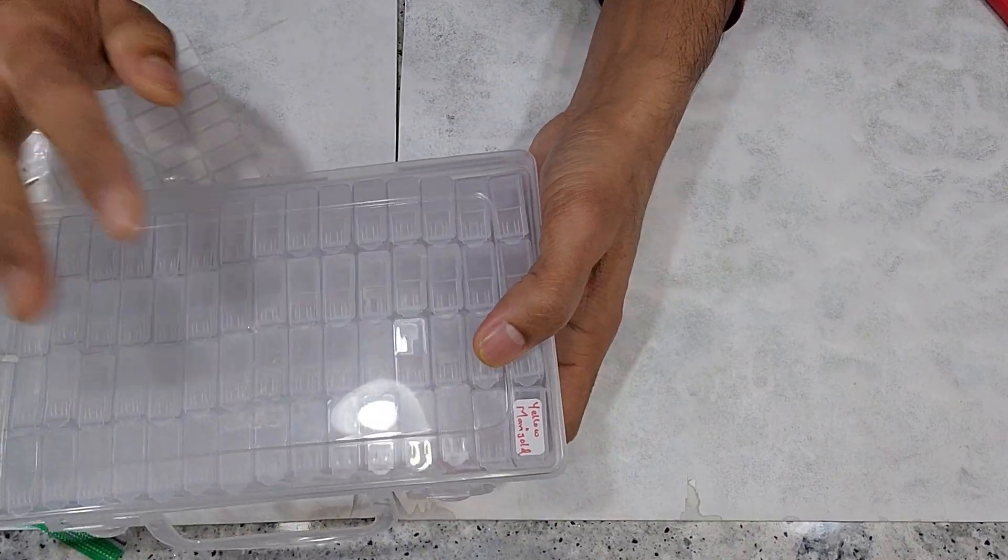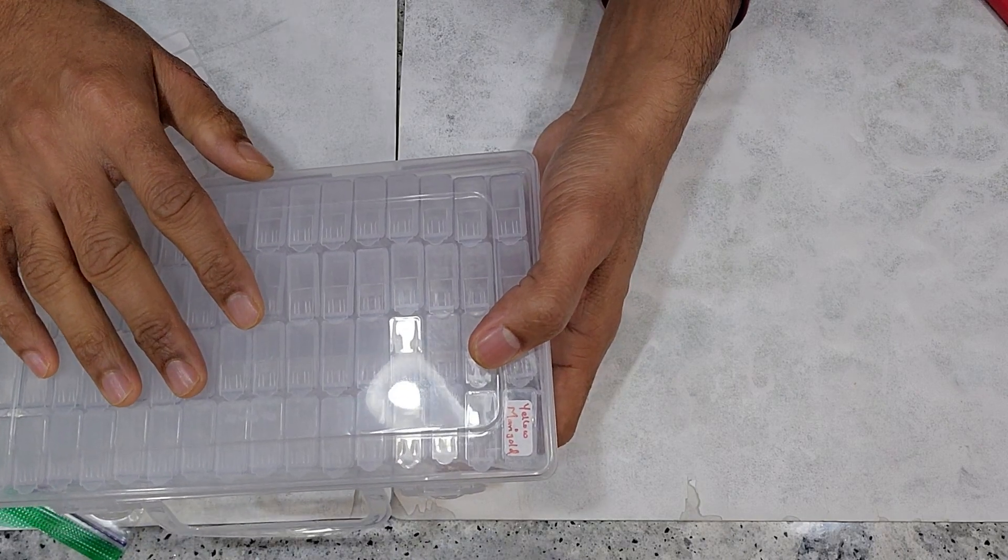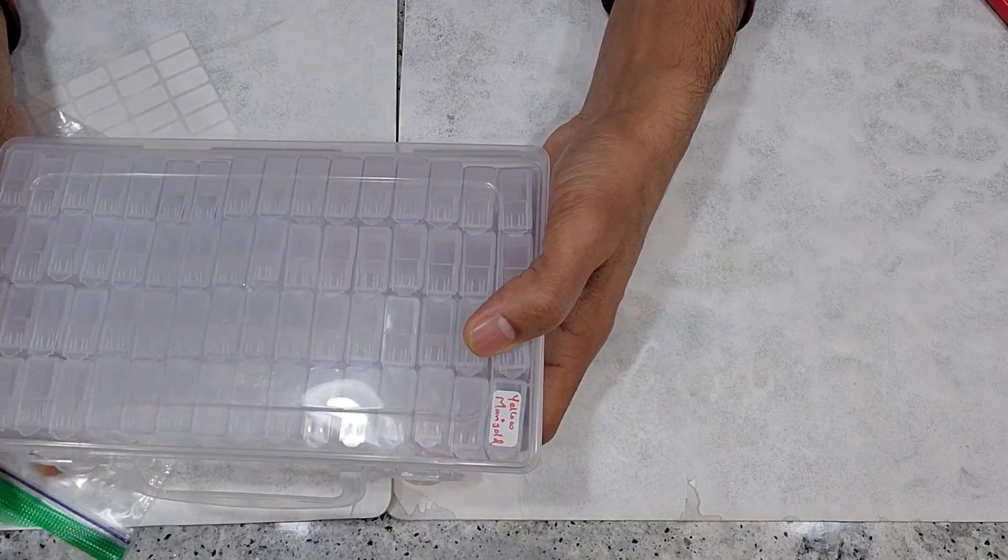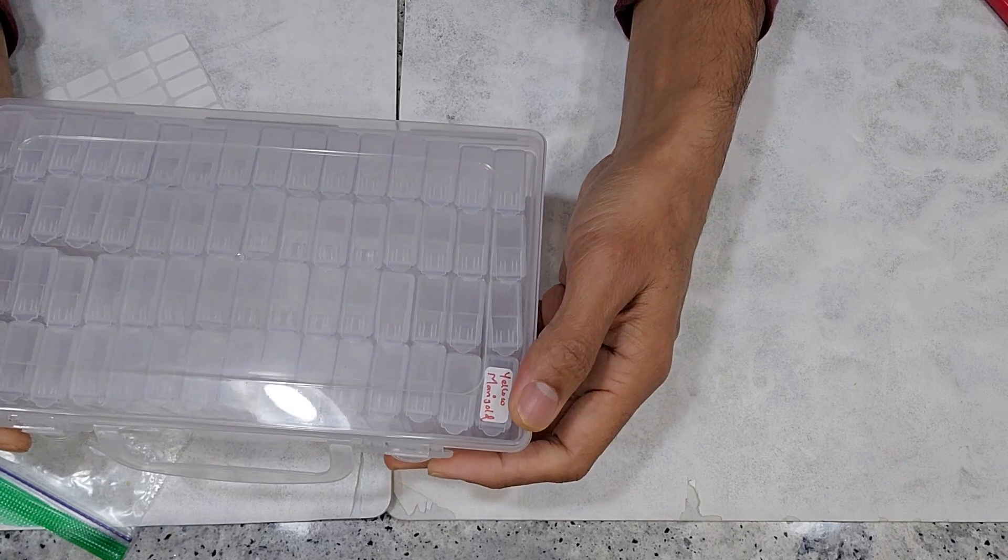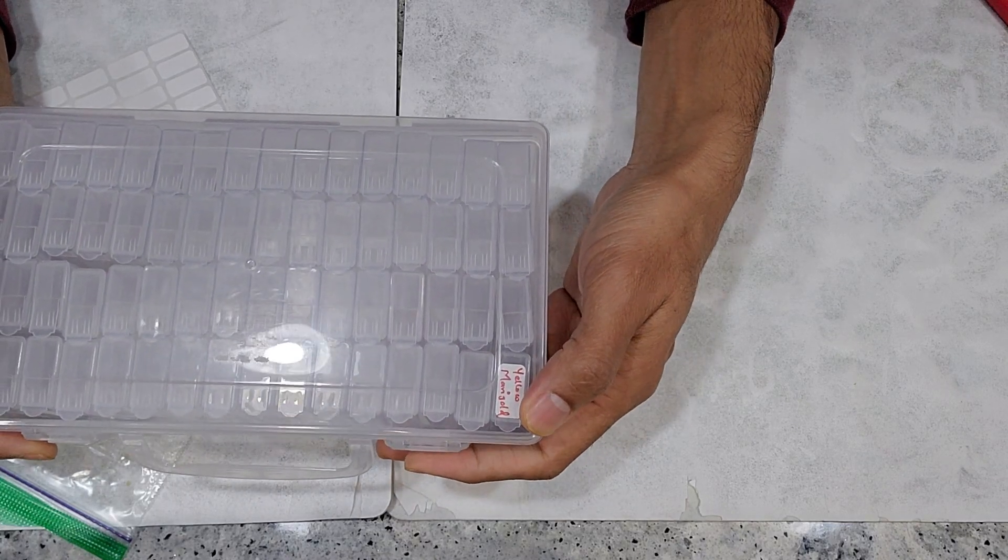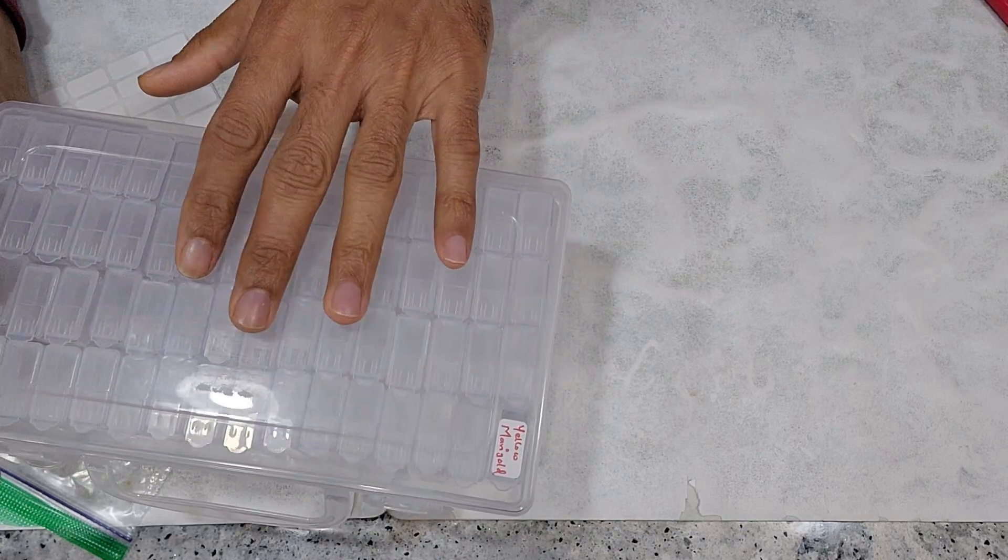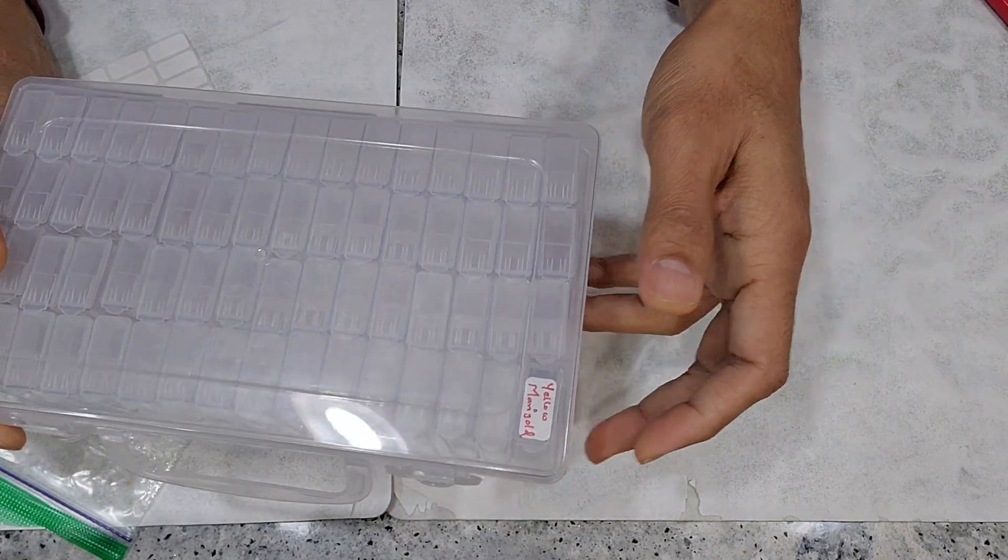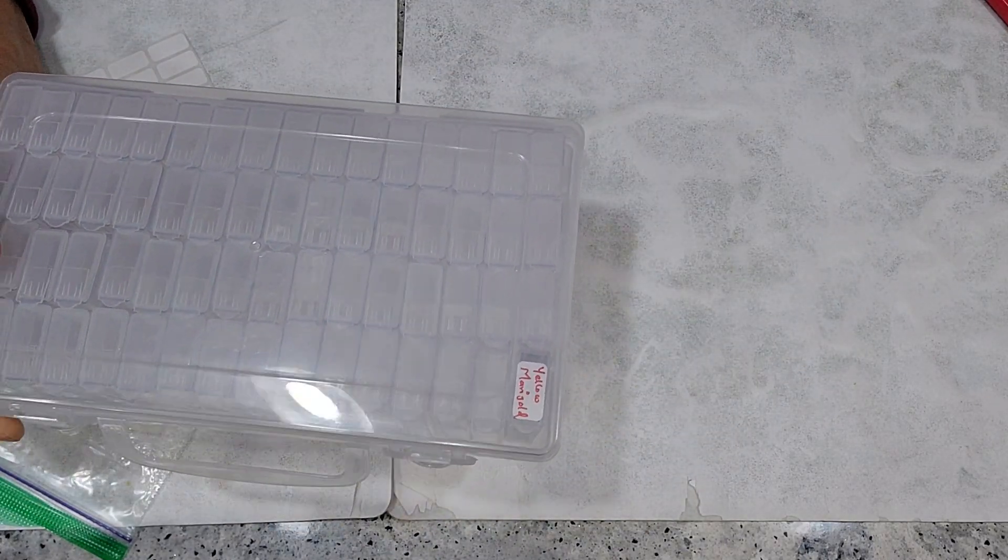If you are interested in this product, you can find the link in the description below. However, you can just search for seed storage box on Amazon and explore the options based on your requirements for number of cells. All right, that is all for now. Thanks for watching and happy gardening.